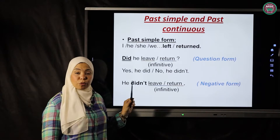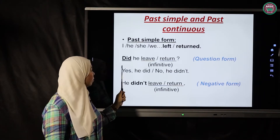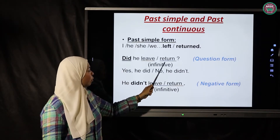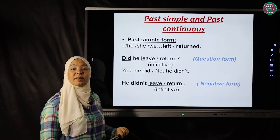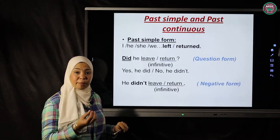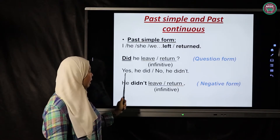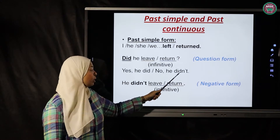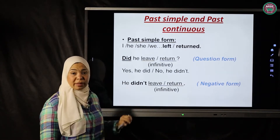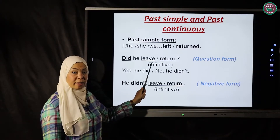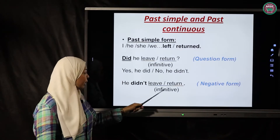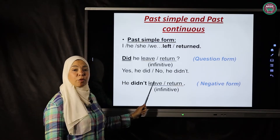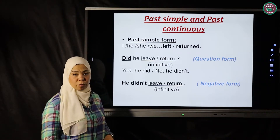This is the question form: to form a question using the past simple, I start by putting 'did' at the beginning — 'Did he leave?' or 'Did he return?' — which means I have to put the verb in the infinitive form. The infinitive means the verb in its base/stem form. The answer using yes or no: 'Yes, he did' or 'No, he didn't.' For the negative form: 'He didn't leave' — put 'didn't' plus the infinitive form of the verb.